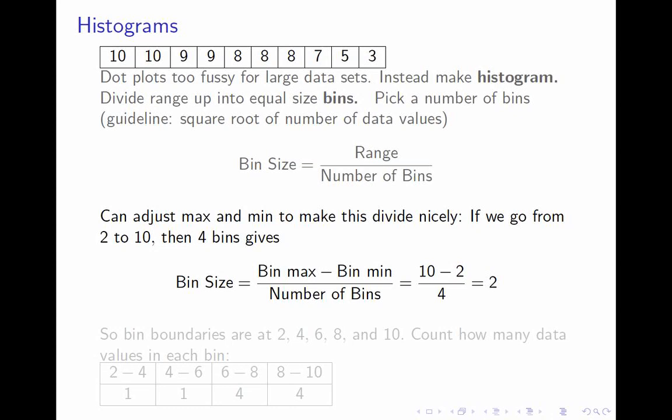So for example, here our range is 7. We decided we wanted 4 bins. That wouldn't divide very nicely. So instead, I'm going to move the minimum down from 3 down to 2. So now, 10 minus 2 is 8, and 4 divides into that nicely to get 2. So I'm going to have 4 bins each of width 2. And the way I mark those off is I start at the minimum. So I move my minimum down to 2. And I count up by the bin size. So you go bin min, add bin size to it, keep adding bin size to it until you get to bin max. So in our case, the bin boundaries are at 2, 4, 6, 8, and 10. And that divides our range from 2 to 10 up into 4 equal sized bins.